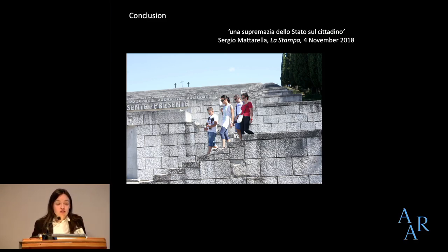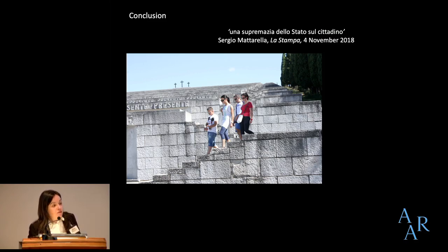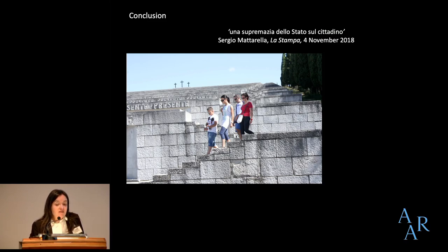I'd like to end with the words of Italian president Sergio Mattarella. Interviewed on the occasion of the centenary of the end of the First World War in 2018, Mattarella affirmed that under fascism, citizenship came to mean the supremacy of the state over the citizen — la supremazia dello Stato sul cittadino. But Mattarella said this need not be the case, pointing to other Italian traditions of citizenship as an alternative route to the fascist approach. Thank you very much for listening.